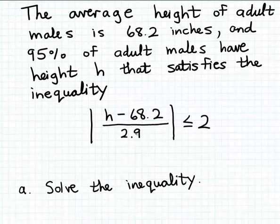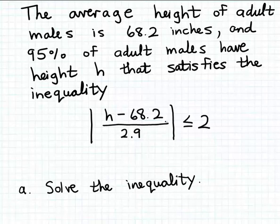In order to solve this inequality, I'm going to use the geometric interpretation of absolute value. Geometrically, the absolute value of a quantity tells us the distance that quantity is away from zero on the number line. Applying that to this inequality, it tells us that the distance that h minus 68.2 divided by 2.9 is away from zero on the number line has to be less than or equal to 2 units — this quantity is no more than 2 units away from zero.